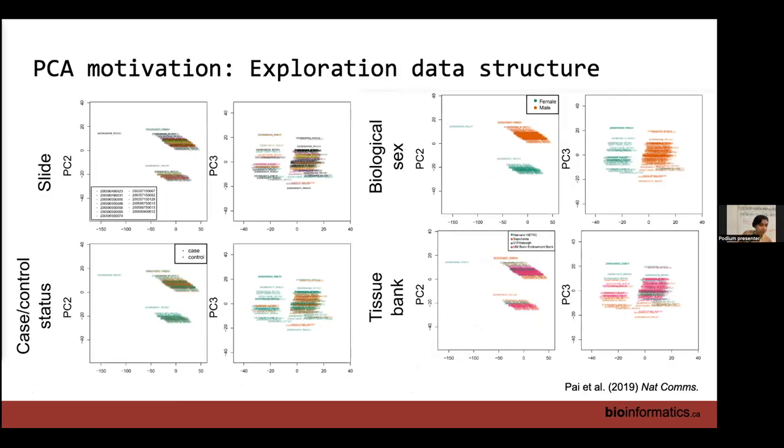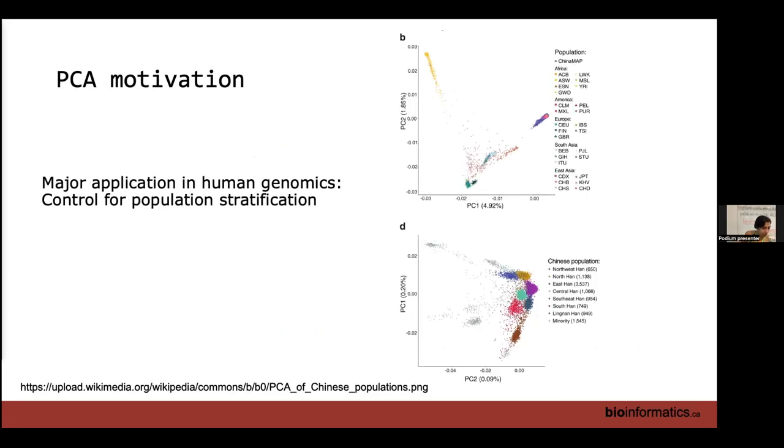That model we talked about yesterday, where you say disease is a function of SNP or vice versa, you add multiple models for 10 principal components. The plot on the bottom is actually showing you the PCA for just individuals from the Han population in China. And even there you can see that individuals from different regions seem to cluster together in the PC plot.